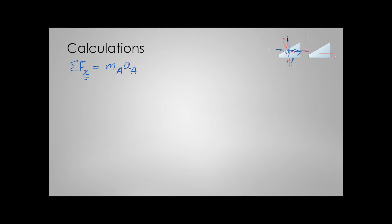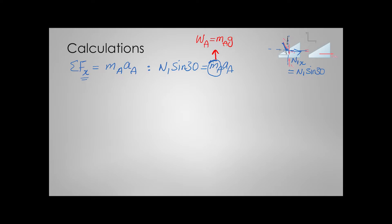The normal force in this direction is going to be N1 times sine of 30, because this angle is 30 degrees. The mass can be obtained from the equation: mass equals weight divided by gravitational acceleration g. So mass equals W_A divided by g. Plugging in the values, this equation is written accordingly.